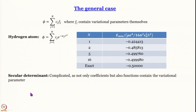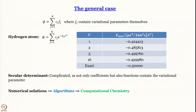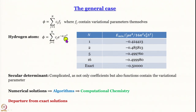When variational parameters appear inside the functions themselves, the secular determinant becomes complicated and cannot be solved analytically — numerical methods are required. Varying parameters computationally and finding the minimum energy opens up the field of computational chemistry. Eventually, one need not even start from exact solutions; any complete orthonormal set will serve as a basis.